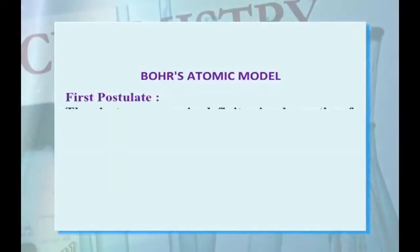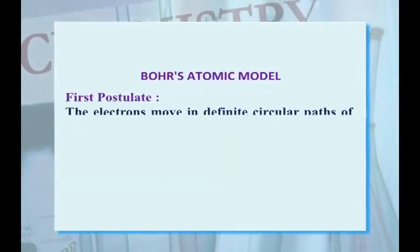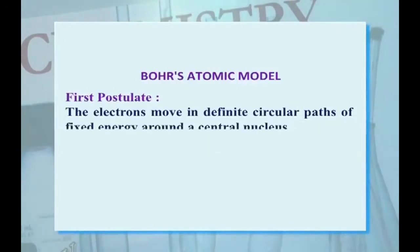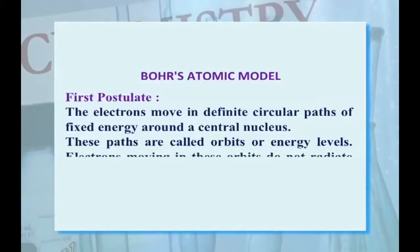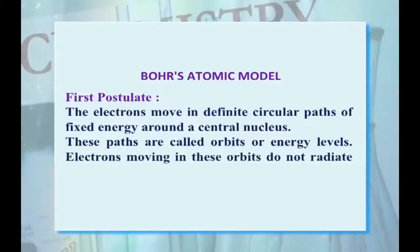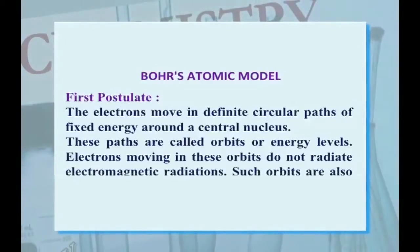After the failure of Rutherford's atomic model, Bohr proposed his atomic model. Its important postulates are as follows. First postulate: the electron moves in defined circular paths of fixed energy around the central nucleus. These paths are called orbits or energy levels. Electrons moving in these orbits do not radiate electromagnetic radiation. Such orbits are also called stationary states.